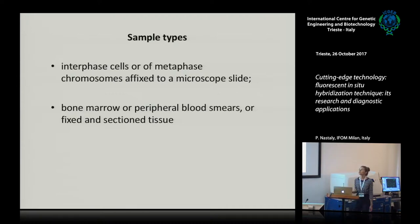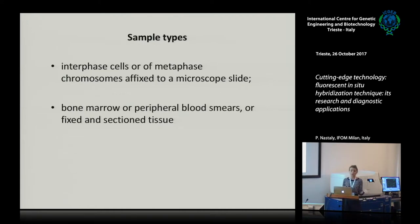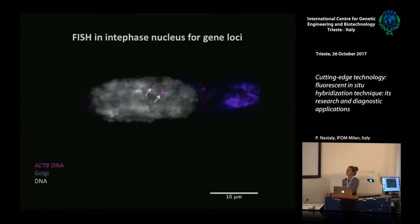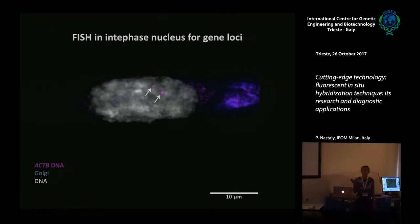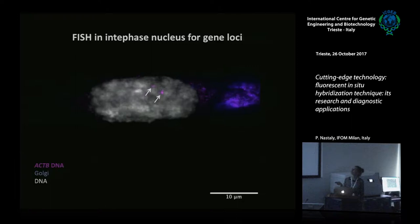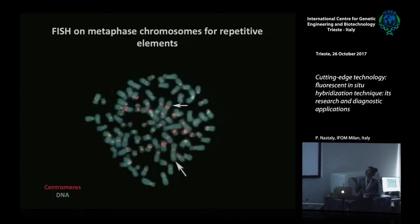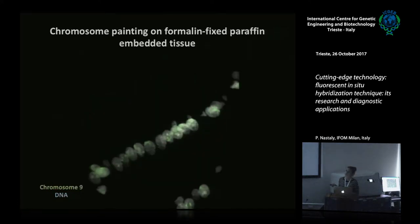FISH can be performed on different cellular material, from interphase nuclei to metaphase spread chromosomes. It can be performed on bone marrow samples, peripheral blood samples, and also on fixed tissue sections. Here are some examples: interphase nuclei with labeled beta-actin loci co-stained for the Golgi apparatus, FISH on metaphase spreads showing labeled centromeres, and FISH on sectioned formalin-fixed paraffin-embedded tissue using a chromosome painting probe for chromosome 9 in epithelial cells of the stomach.